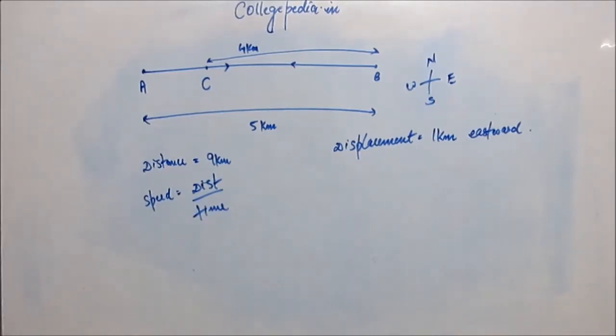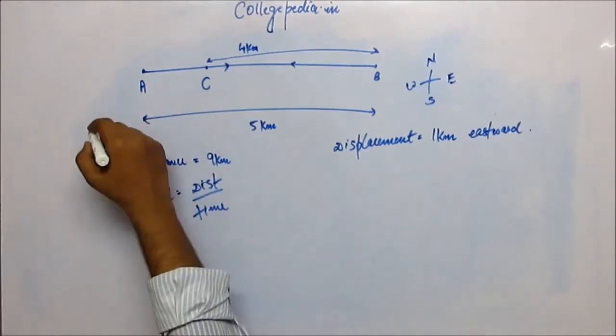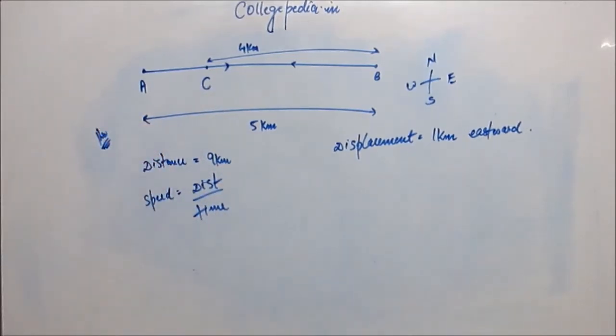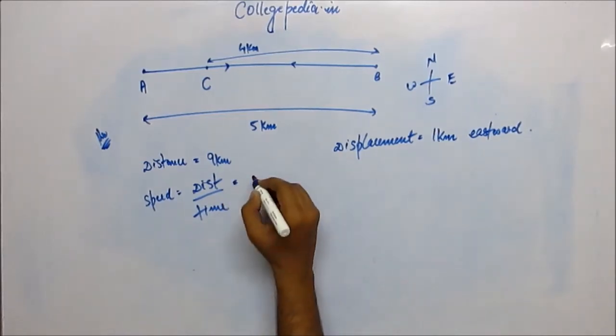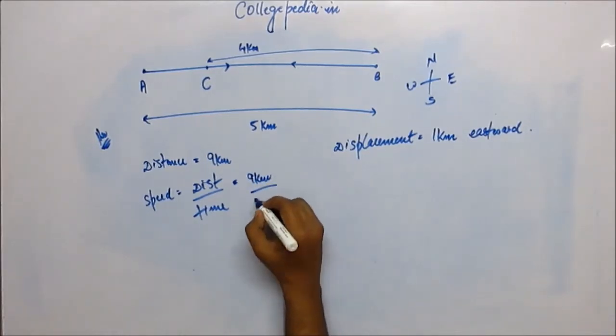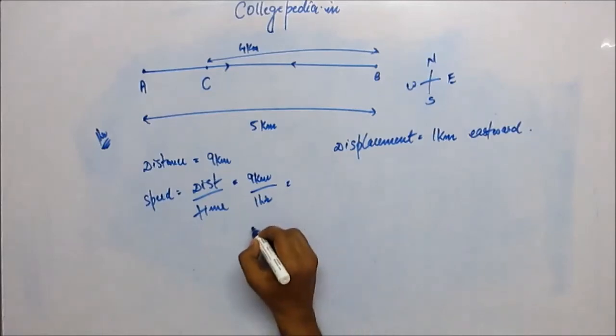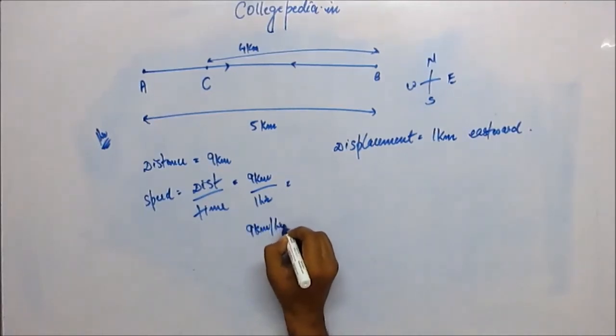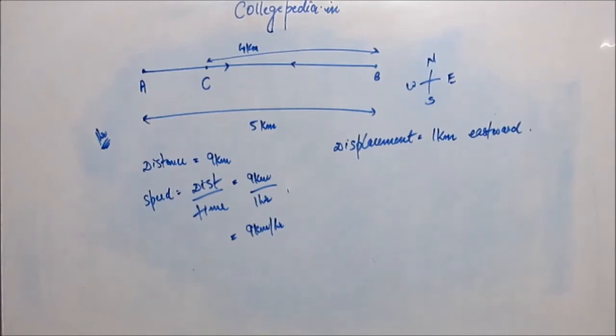Here distance is 9 kilometers. Let's assume the time taken to be 1 hour. Then speed would be 9 kilometers upon 1 hour, so 9 kilometers per hour. But let's make a habit to always use the SI unit of every physical quantity. 9 kilometers can be written as 9000 meters, and 1 hour as 60 times 60 seconds. That turns out to be 2.5 meters per second.